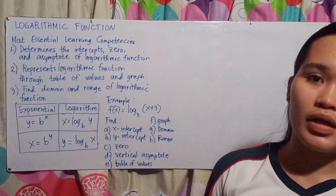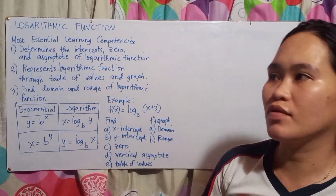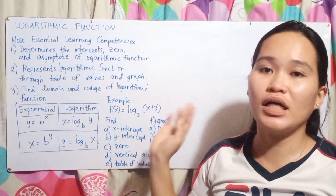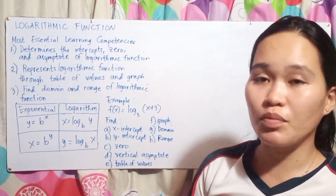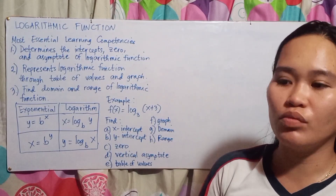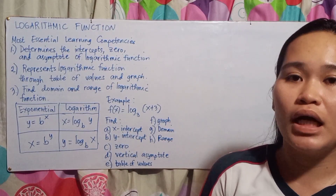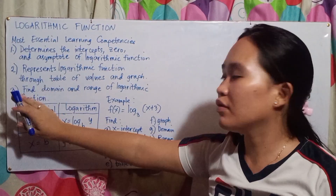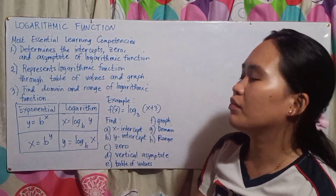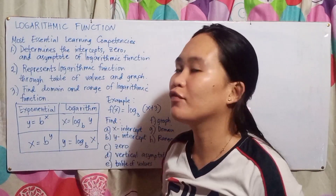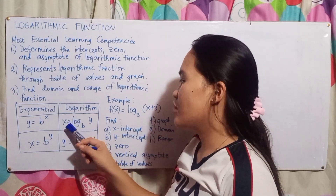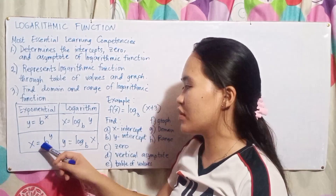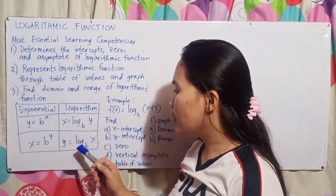Take note: logarithms are inverses of exponentials and vice versa. When solving a logarithm, you can use the exponential form, and when you can't solve with exponential alone, you use the logarithm. In exponential form, y equals b raised to the power of x; when transformed to logarithm form, it becomes x equals log base b of y.